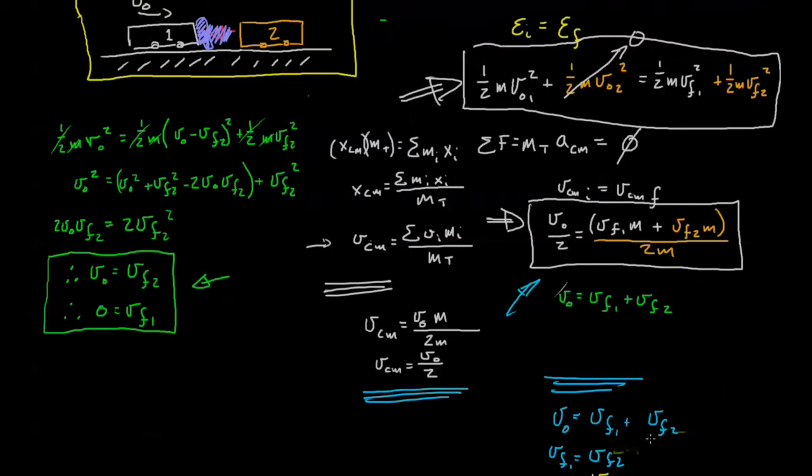Now we can trivially solve this problem. We simply have two equations, two unknowns in a very simple way, and we see that the velocity of 1 equals v0 over 2, which also equals the final velocity of 2. All right, so we have a rather trivial solution.